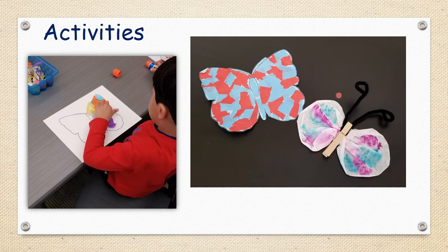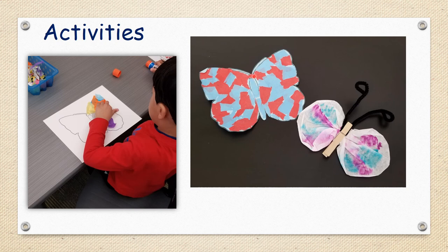Another activity is coffee filter butterflies. We take markers, color in the coffee filter, then spray it with just a little bit of water — you don't want too much, that can get very messy, so maybe have an adult help. You let the filter dry, then twist it in the middle and put a clothespin over it. Then you can take pipe cleaners and shape them into antennae. Don't forget the three sections of your insect: the head, the thorax, and the abdomen.